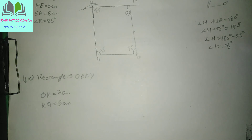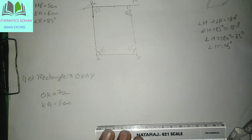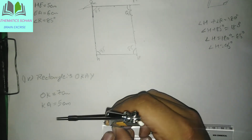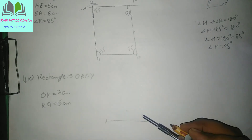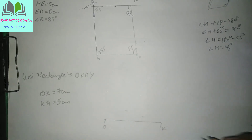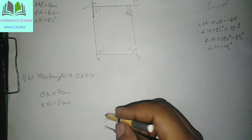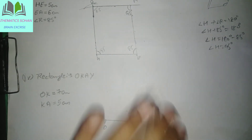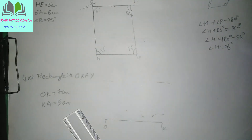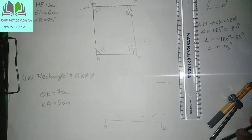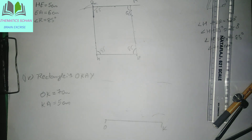Okay students, part number 4 aapne rectangle banana hai. Rectangle banana ka simple sa tarika hai — aap ek line lete hain, koi bhi ek line le lijiye. Rectangle ke saare angles 90-90 degree hote hain, toh aapne yahan par 90 degree angle banana hai aur uska aage produce kar dena, phir 90 degree angle bana produce kar dena — ke 5 cm yahan se lekar 5 cm yahan par laga ke aapne cut kar dena, aur yahan par bhi cut kar dena. Phir dono ko aap join karwa dena. I hope you can do that — so please try yourself. Aapko class kaisi lagi — agar achi lagi toh like kijiye, subscribe kijiye, apne friends ke saath share kijiye.